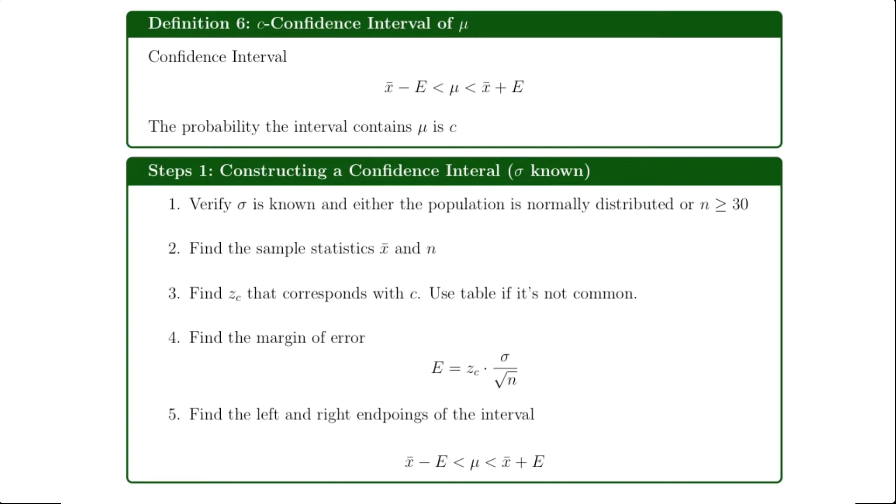So here are the steps. Right here I have the confidence interval for a population mean, and E right here is the margin of error. The formula for the margin of error is right here, and the probability of your population mean being in this interval is the confidence level that you're given.